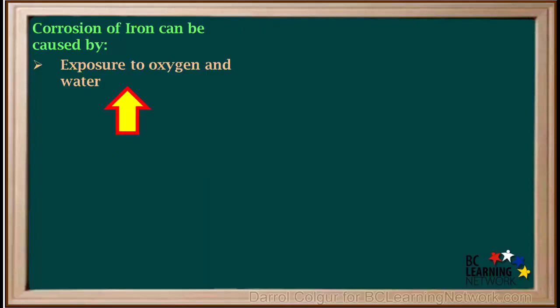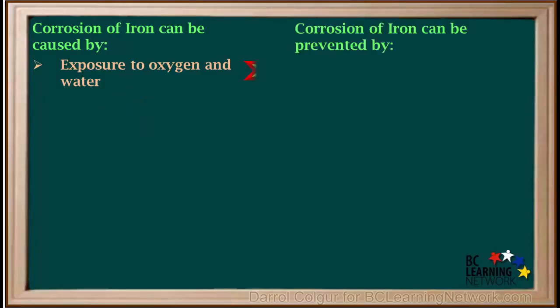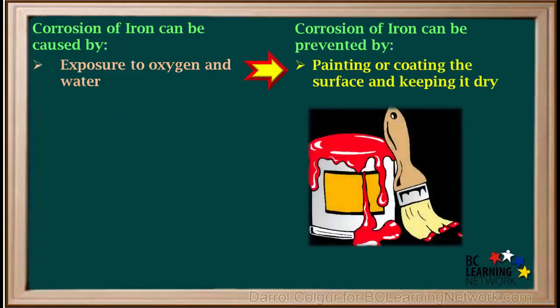Corrosion of iron, or rusting, is primarily caused by exposure of an iron surface to oxygen and water. We can deal with this by painting the surface or coating it with an anti-rust coating and keeping it dry.